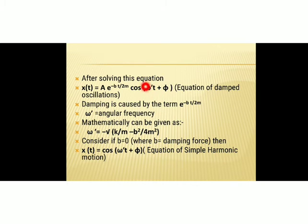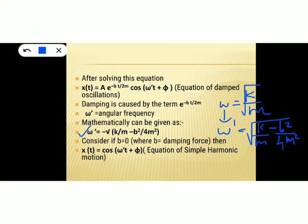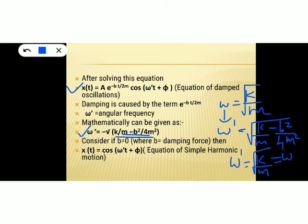Here ω′ is the angular frequency in the presence of damping, and it is given by: ω′ = √(k/m − b²/4m²). In the absence of damping, ω was simply √(k/m). In the presence of damping, ω becomes ω′ with the additional damping term b²/4m². If you put b = 0, you get ω′ = √(k/m), which equals the angular frequency in the absence of damping.